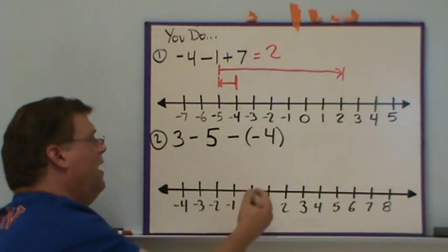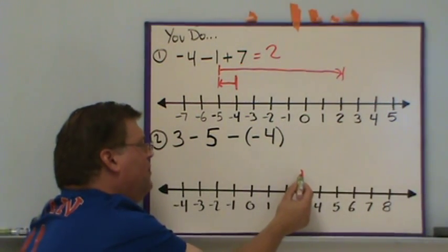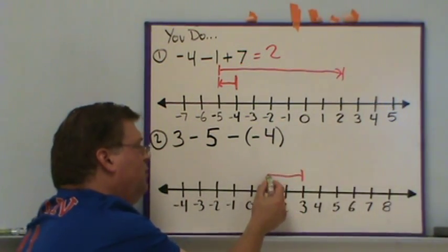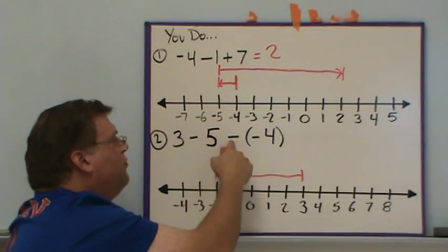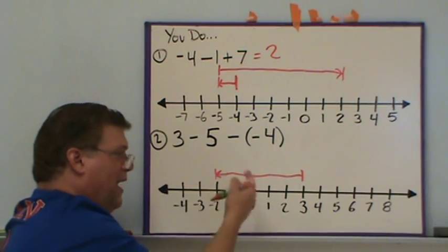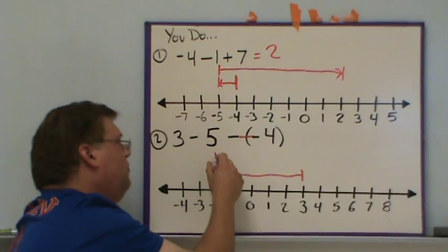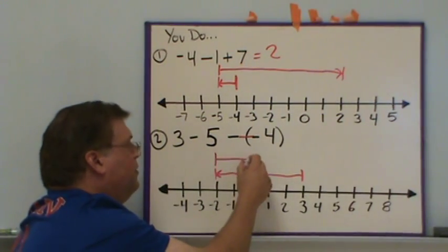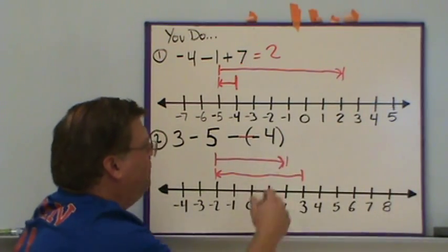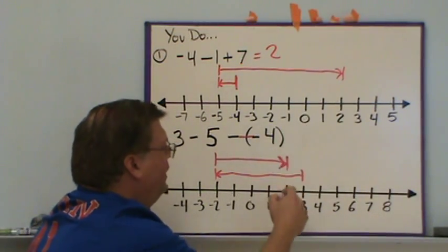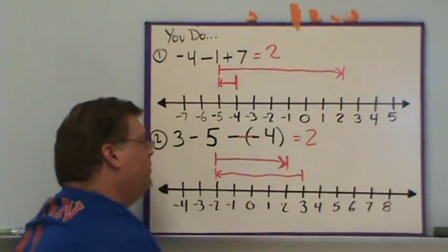For the second problem, we start at three and draw the vertical line there. Minus five means going left five steps. Then we're subtracting a negative four — subtracting a negative is the same as adding the positive, so we go to the right four steps. We end up at two, so our solution here is two.